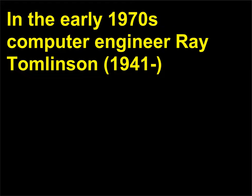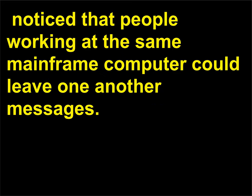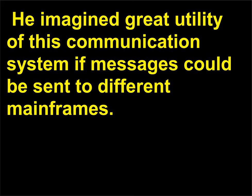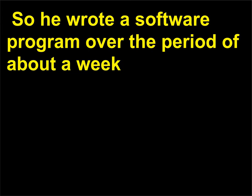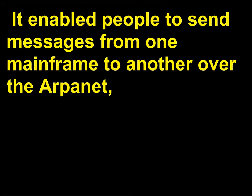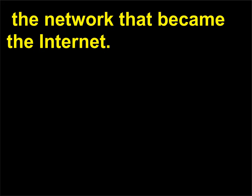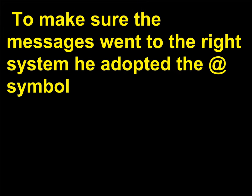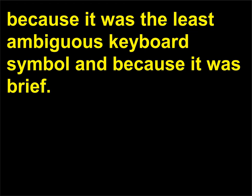In the early 1970s, computer engineer Ray Tomlinson (1941) noticed that people working at the same mainframe computer could leave one another messages. He imagined great utility of this communications system if messages could be sent to different mainframes. So he wrote a software program over the period of about a week that used file transfer protocols and send and receive features. It enabled people to send messages from one mainframe to another over the ARPANET, the network that became the Internet. To make sure the messages went to the right system, he adopted the @ symbol because it was the least ambiguous keyboard symbol and because it was brief.